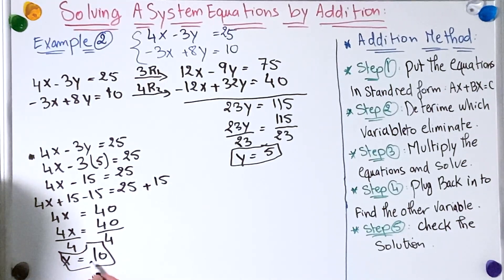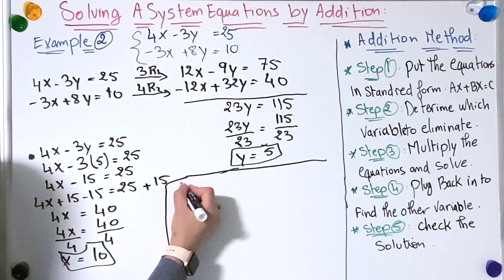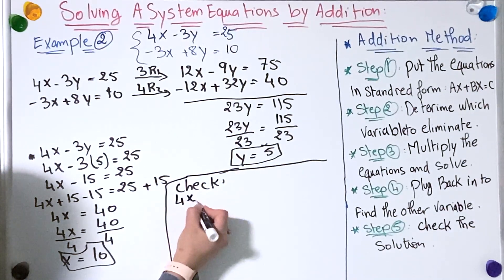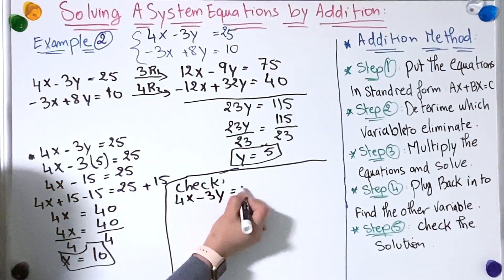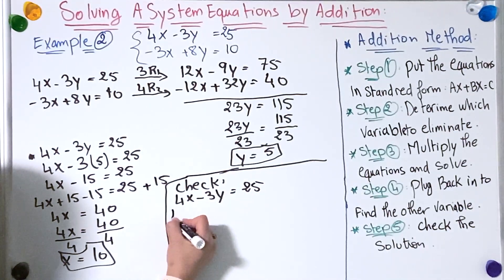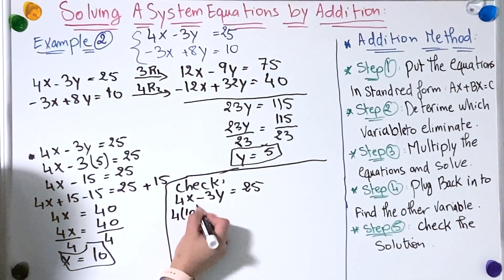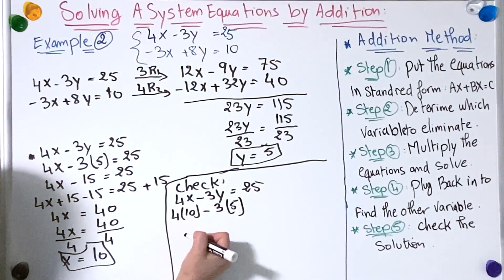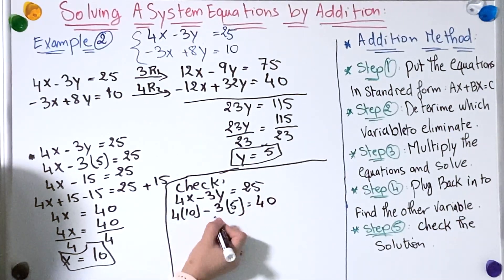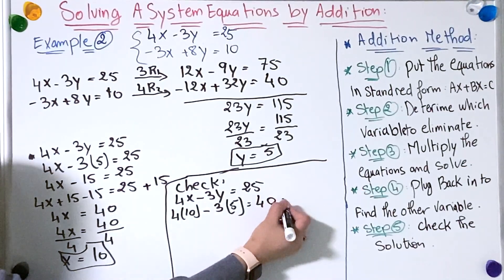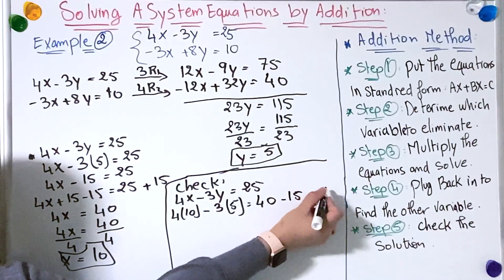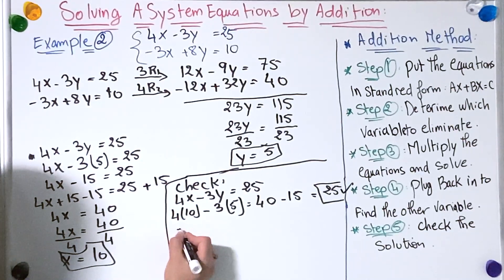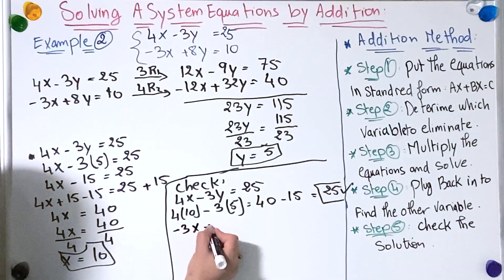Now we have x and y, so we're going to check our answer in both equations. First equation: 4x minus 3y equals 25. Replacing x and y: 4 multiplied by 10 minus 3 multiplied by 5. That gives 40 minus 15, which equals 25. This is true.